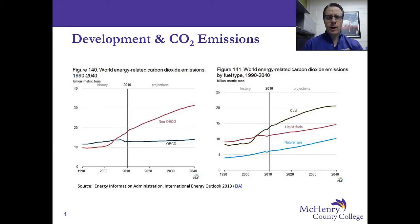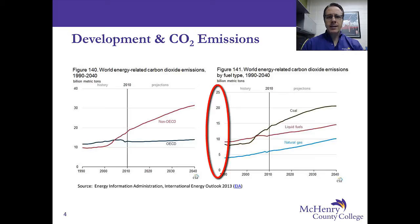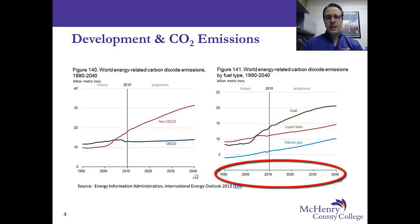This is an unresolved question and it causes a lot of controversy. Figure 141 looks at world energy-related carbon dioxide emissions by fuel type. Again, we have on the Y-axis billion metric tons — 0, 5, 10, up to 25 billion metric tons — and the same temporal scale on the X-axis from 1990 to 2040.